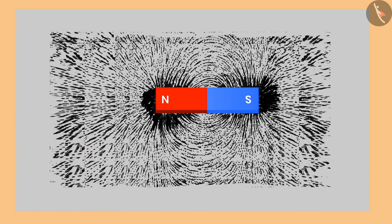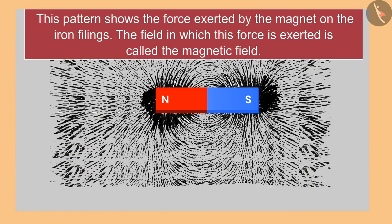If we look at the fillings closely, a formed pattern can be seen. This pattern shows the force exerted by the magnet on the iron filings. The field in which the force is exerted is called the magnetic field. The lines on which the fillings can be seen are known as magnetic field lines.